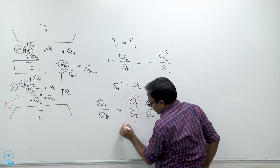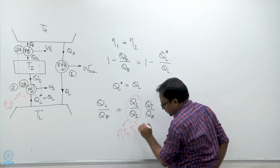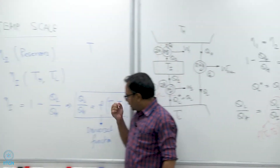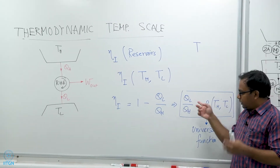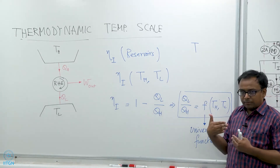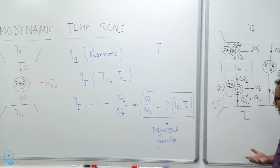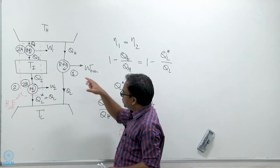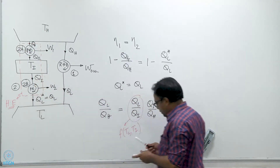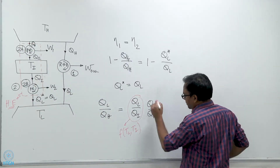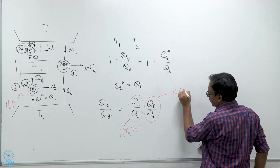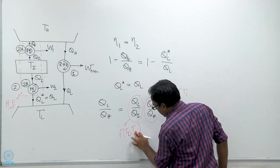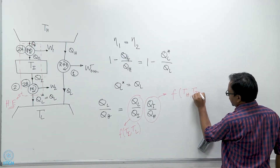So Q_H/Q_L can be written as (Q_H/Q_I) times (Q_I/Q_L). Now I know that for a reversible heat engine, Q_L/Q_I is equal to F(T_L, T_I) — that is using the principle that the ratio of heat rejected to the low temperature reservoir and heat taken from the high temperature reservoir is a universal function. So Q_L/Q_I has this form for the 2B heat engine.